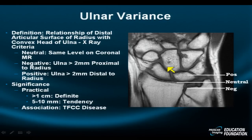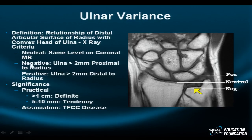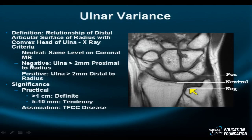Let's look at the variance on MR. Neutral variance is where the non-styloidal portion of the ulna aligns perfectly with the radius. In this example, we have negative ulnar variance posture — because it's an MR, not an X-ray. On X-ray, we use a number as small as 2 millimeters in discrepancy between these two. On MR, we use a much bigger number: 8 to 10 millimeters, or as much as a centimeter.